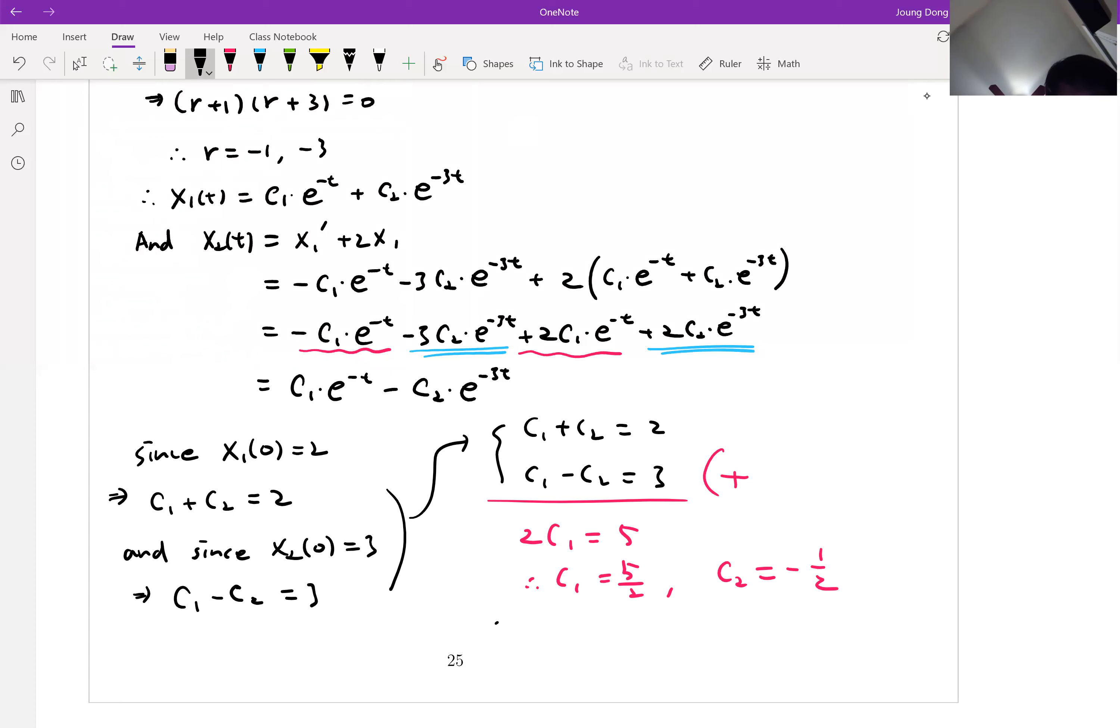Then finally, I can say, my x1(t) is equal to 5 over 2 e to the minus t minus 1 half e to the minus 3t. And my x2(t) is equal to 5 over 2 e to the minus t and c2 is minus 1 half is plus 1 half e to the minus 3t. That's it.